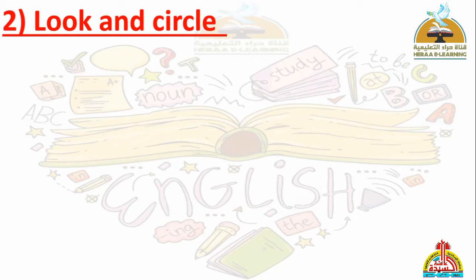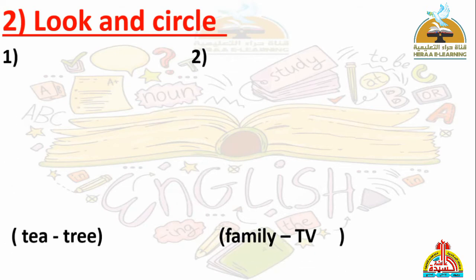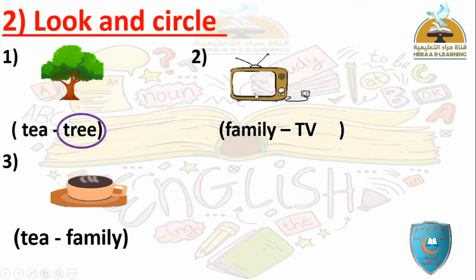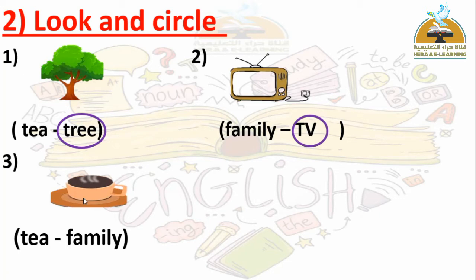Number two: Look and circle — انظر وضع دائرة. Number one: What can you see? I can see a tree — شجرة. The answer is the second word: tree. Number two: What can you see? TV — تلفزيون. The answer is the second word: TV. Number three: What can you see? Tea — شاي. The answer is the first word: tea. Excellent.